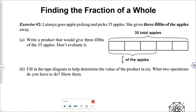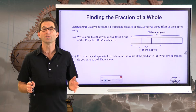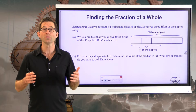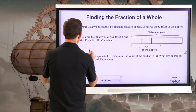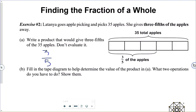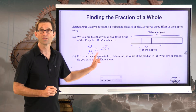Exercise number two. Latanya goes apple picking and picks 35 apples. She gives three-fifths of the apples away because, quite frankly, 35 apples is a lot. Letter A: write a product that would give three-fifths of the 35 apples — don't evaluate it. When you see a statement like three-fifths of 35, you recognize that means three-fifths times 35.